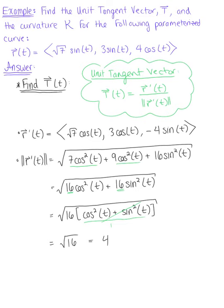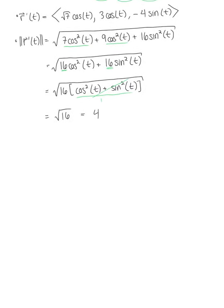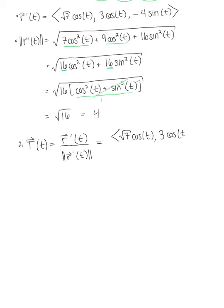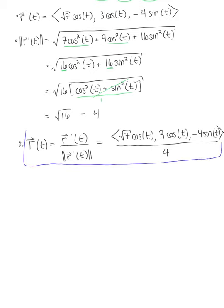Using this, we're now ready to find the unit tangent vector. Therefore, the unit tangent vector is r prime of t divided by the magnitude of the tangent vector. We have the tangent vector — the square root of 7 cosine of t, 3 cosine of t, and minus 4 sine of t — all over a magnitude of 4. This is our final answer for the unit tangent vector: a vector of length 1 pointing in the direction of our tangent vector.